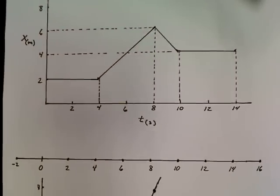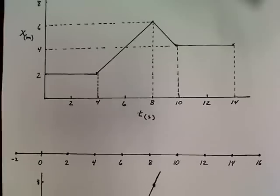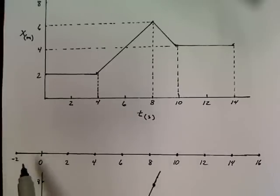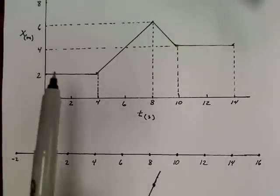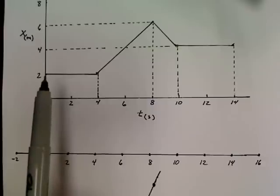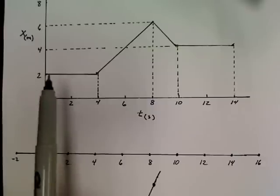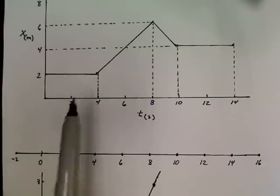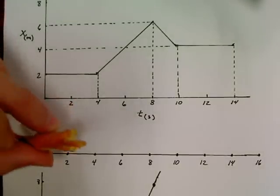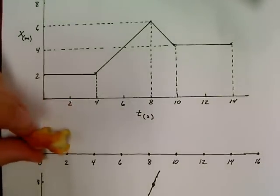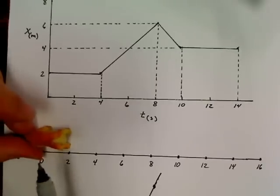What I've done here is I've copied down a little number line, just like an x-coordinate system, with values of 0, 2, 4, 6, and so forth. According to the graph, my object starts off at a time of 0 at the 2-meter mark. So my object is going to be a little dinosaur — a little brontosaurus — and I'm going to put him down here at the 2-meter mark.